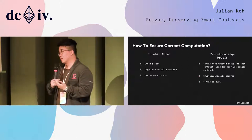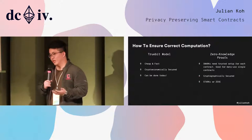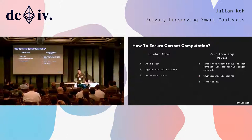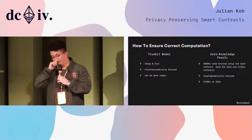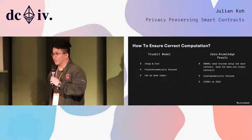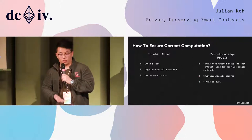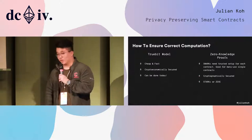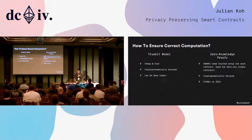SNARKs are quite interesting here, but they need a trusted setup for each type of computation. That might be fine for one contract used many times — like Zcash — but requiring a new trusted setup for each smart contract is not scalable. There are cool new approaches like STARKs, and a new protocol called Zexi by some Cornell researchers, which also tackle this in interesting ways.